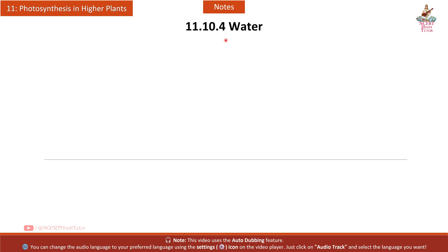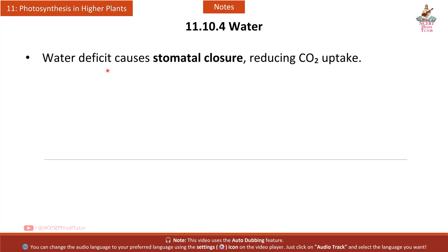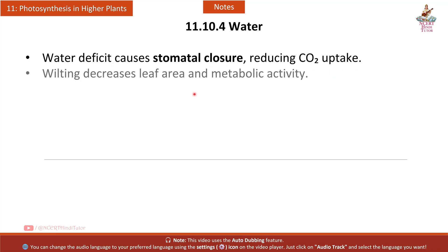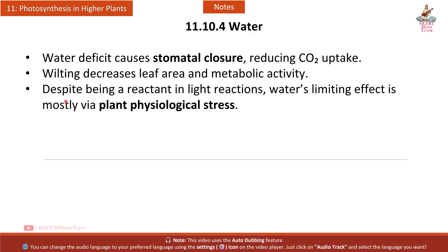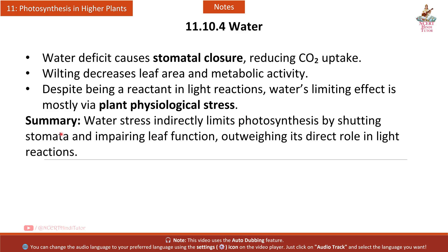Section 11.10.4 Water: water deficit causes stomatal closure, reducing CO2 uptake. Wilting decreases leaf area and metabolic activity. Despite water being a reactant in light reactions, its limiting effect is mostly through plant physiological stress — water stress indirectly limits photosynthesis by shutting stomata and impairing leaf function, outweighing its direct role in light reactions.